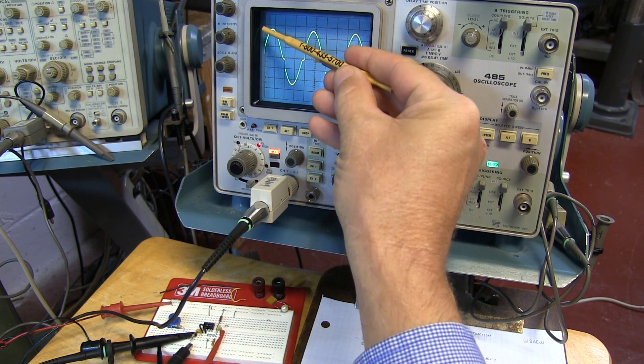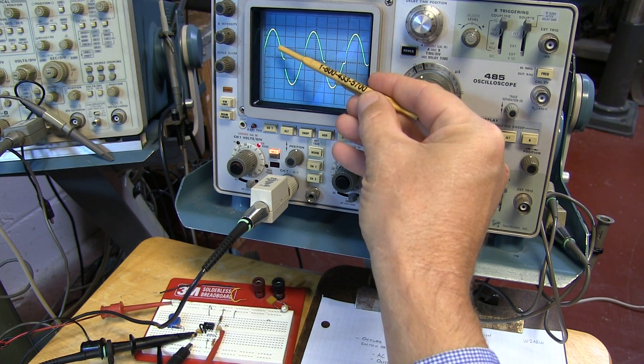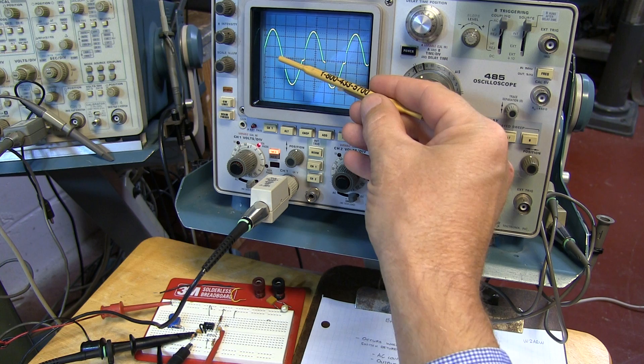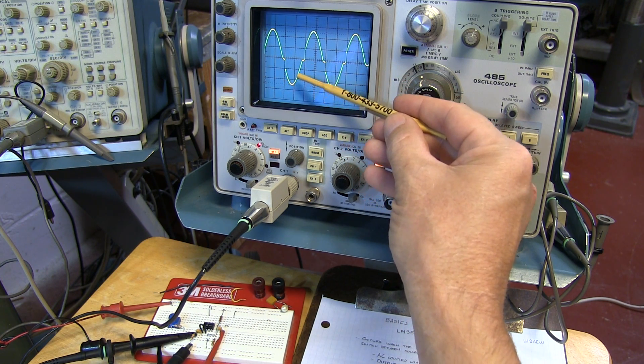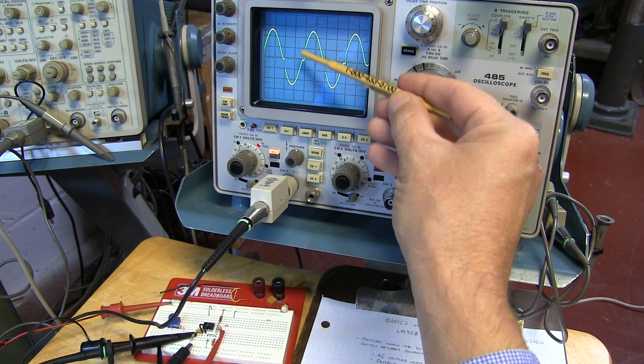As the positive half cycle, when the output is sourcing current, it looks fine. And then there's a kind of a discontinuity in the waveform, and then the negative half cycle picks up until we get about to ground again, and then that happens again.